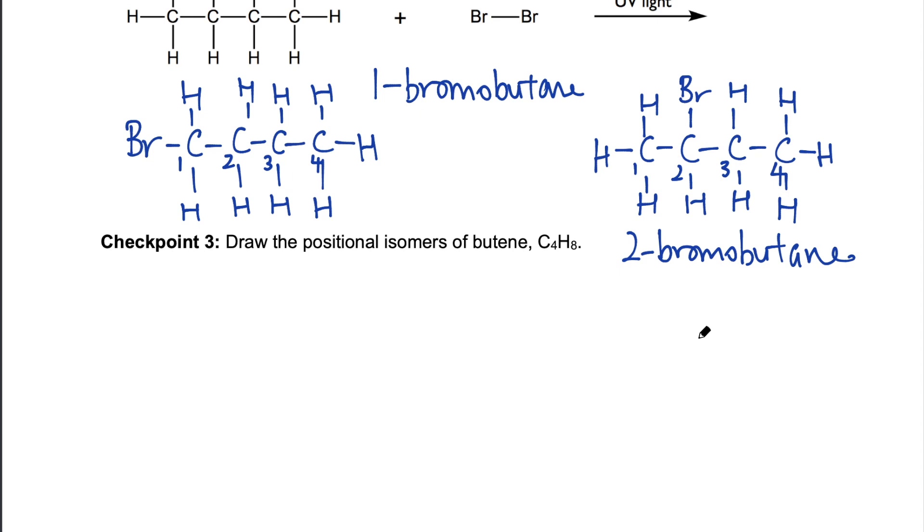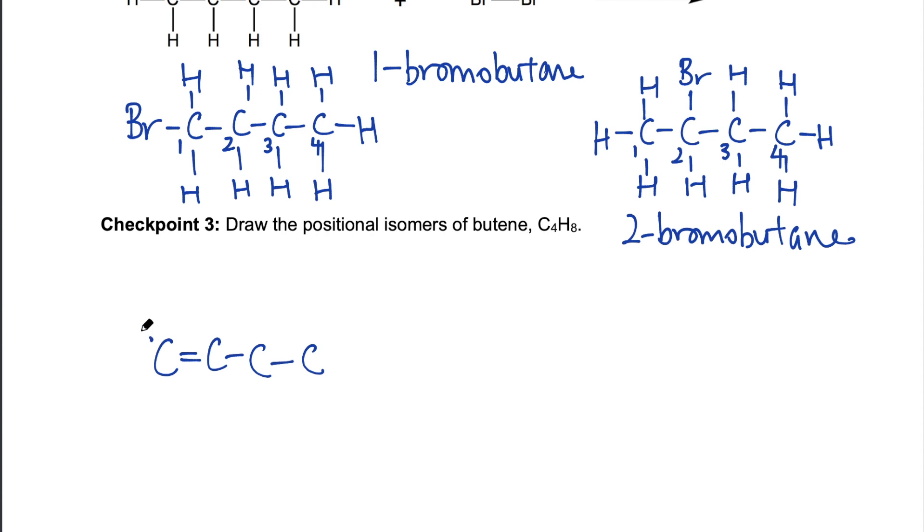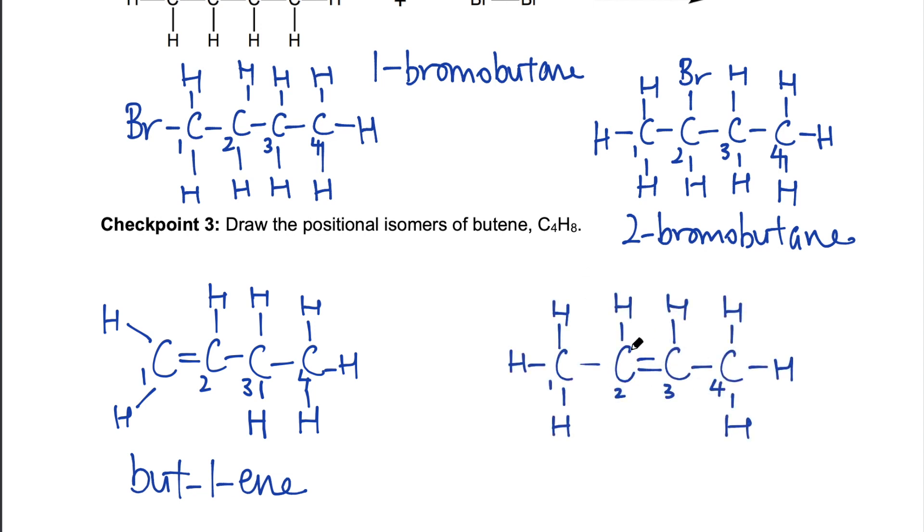Let's try checkpoint 3. You may pause the video and give it a try first, before I give you the answers. We'll draw butane first. Remember each carbon has four lines coming out. The double bond is right at the end, between carbon number 1 and number 2. So we'll call this but-1-ene. It is possible to put the carbon-carbon double bond elsewhere, like in the middle. Now the carbon-carbon double bond is between number 2 and 3. So this is called but-2-ene. So they are positional isomers, because the functional group is on a different position.